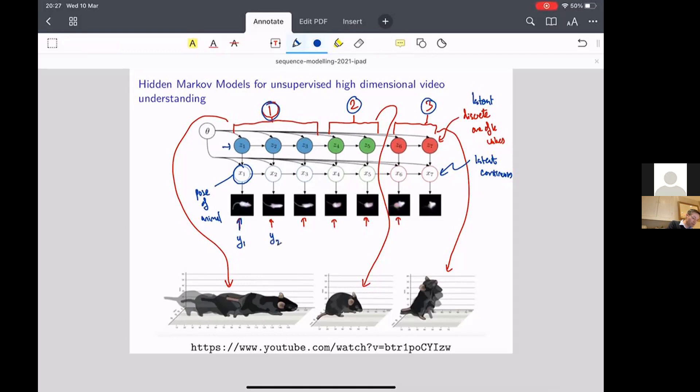all the way up to Y_T here, these are going to depend in a nonlinear way actually on the pose of the animal. And they're actually going to use a little neural network in there to describe the relationship between the pose variables X and the depth camera measurements at the bottom.